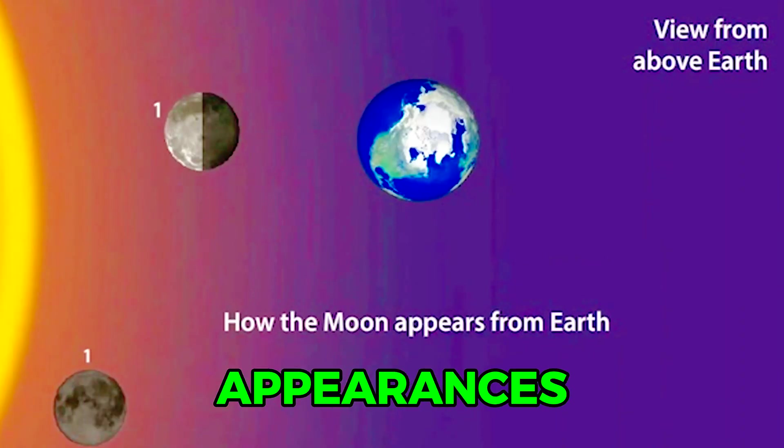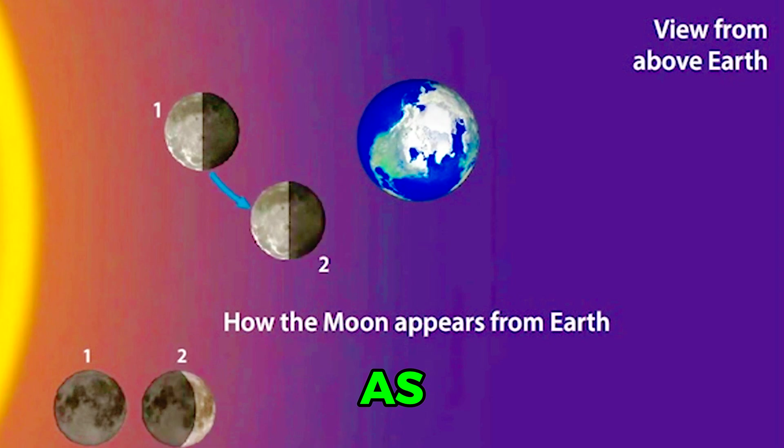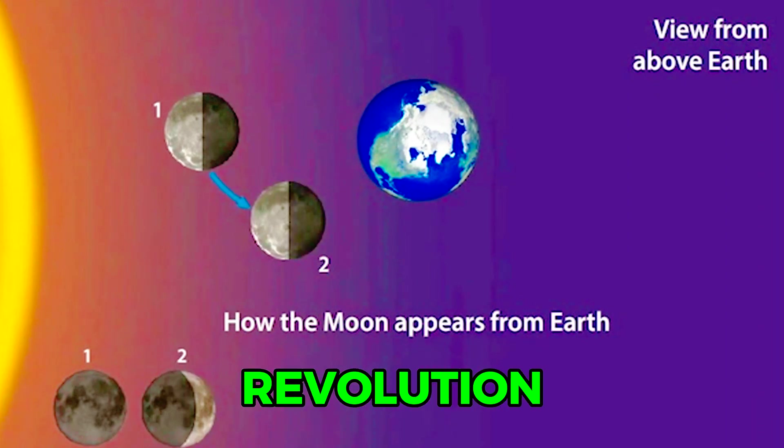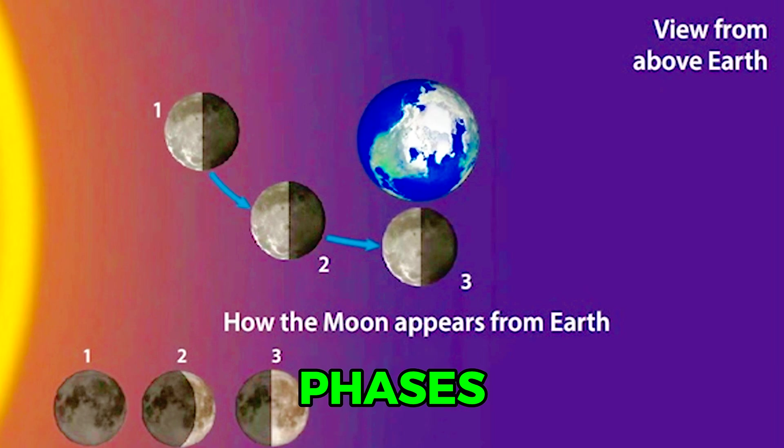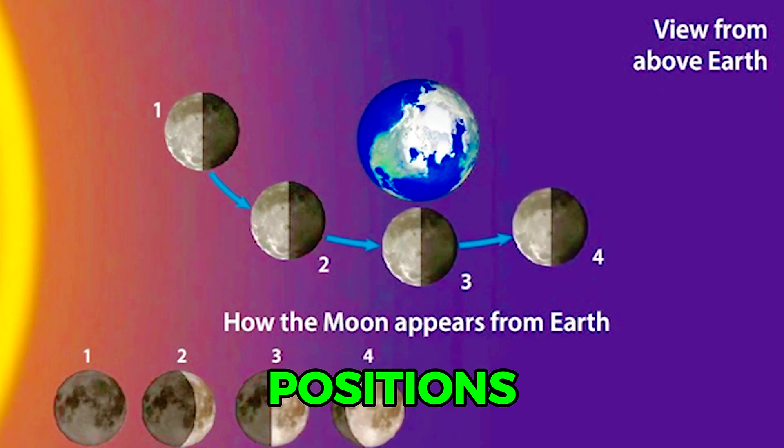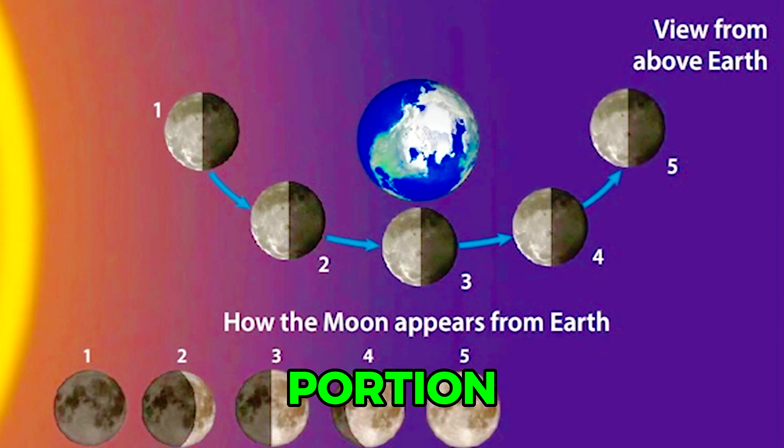The changing appearances of the Moon as it makes one complete revolution around the Earth are known as Moon phases. The positions of the Sun, Earth, and Moon determine the portion of the Moon that is lit by sunlight.